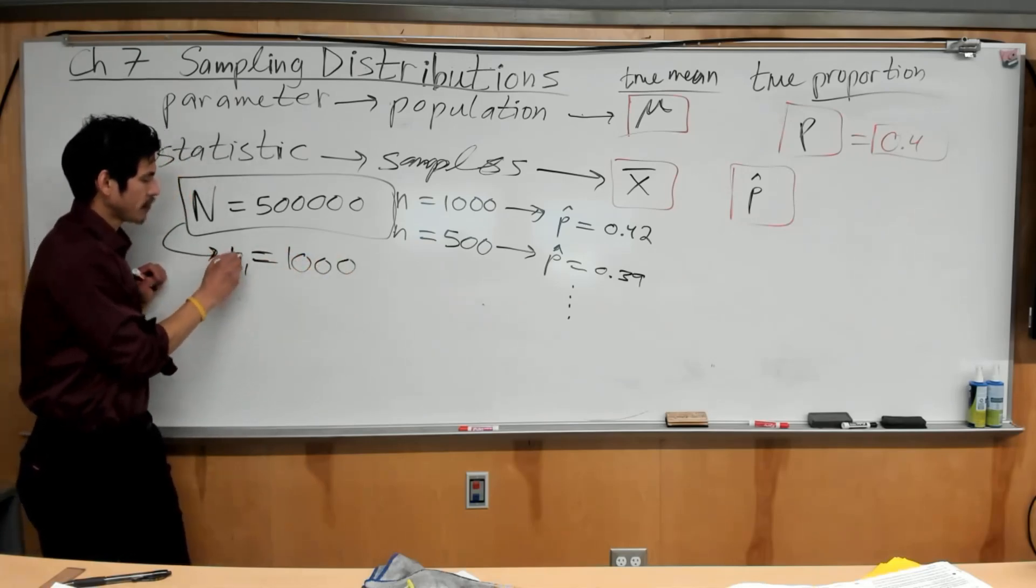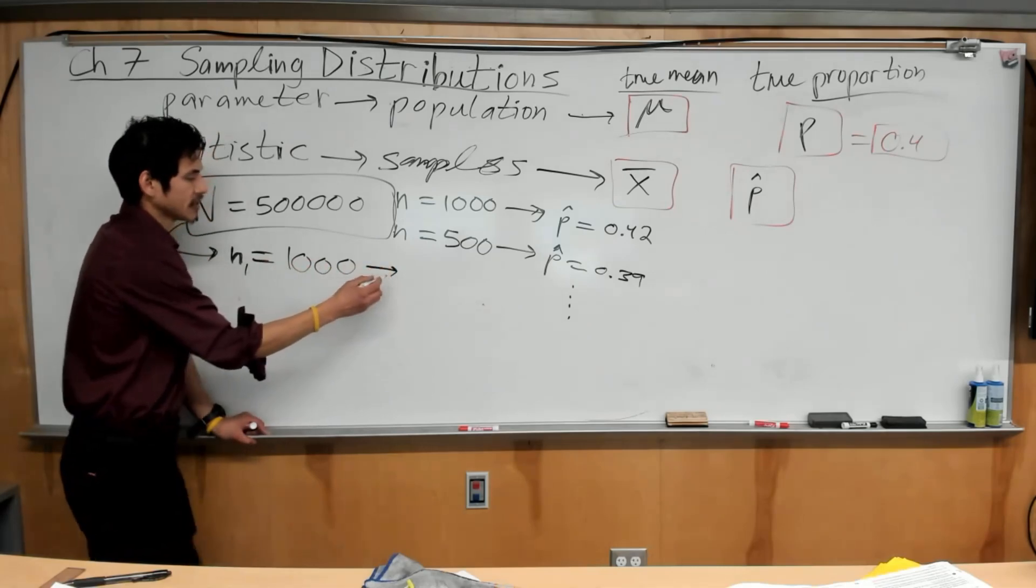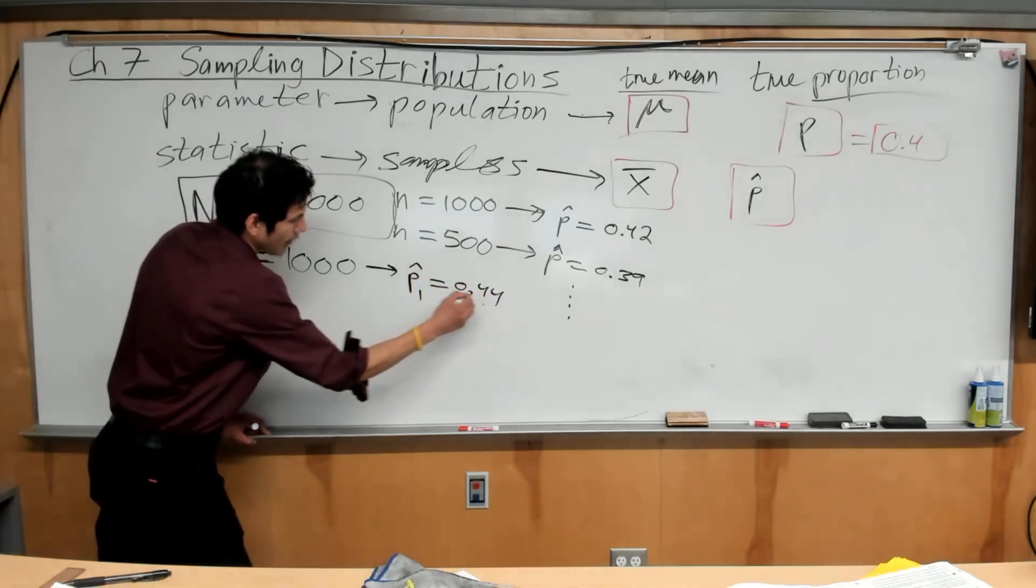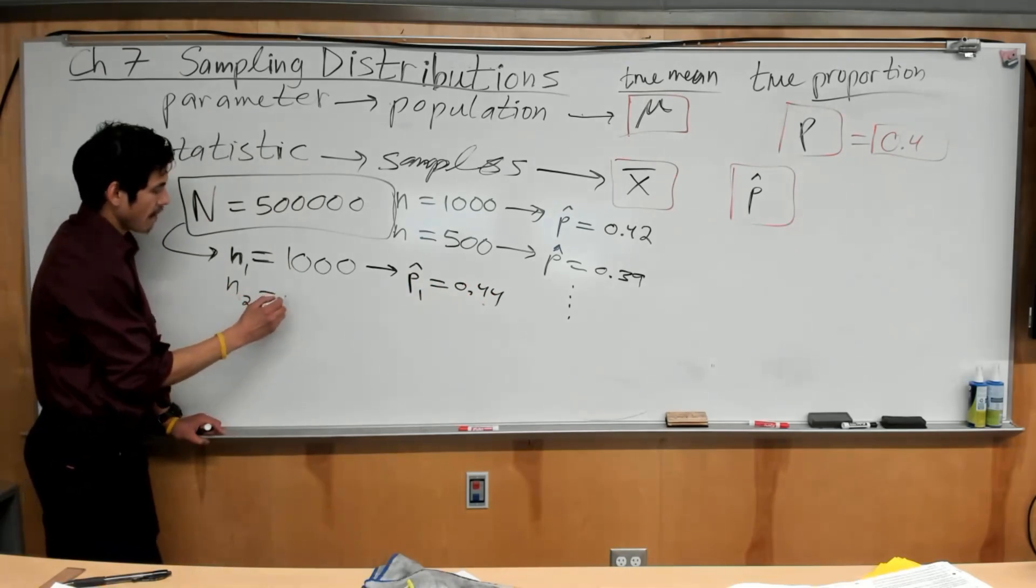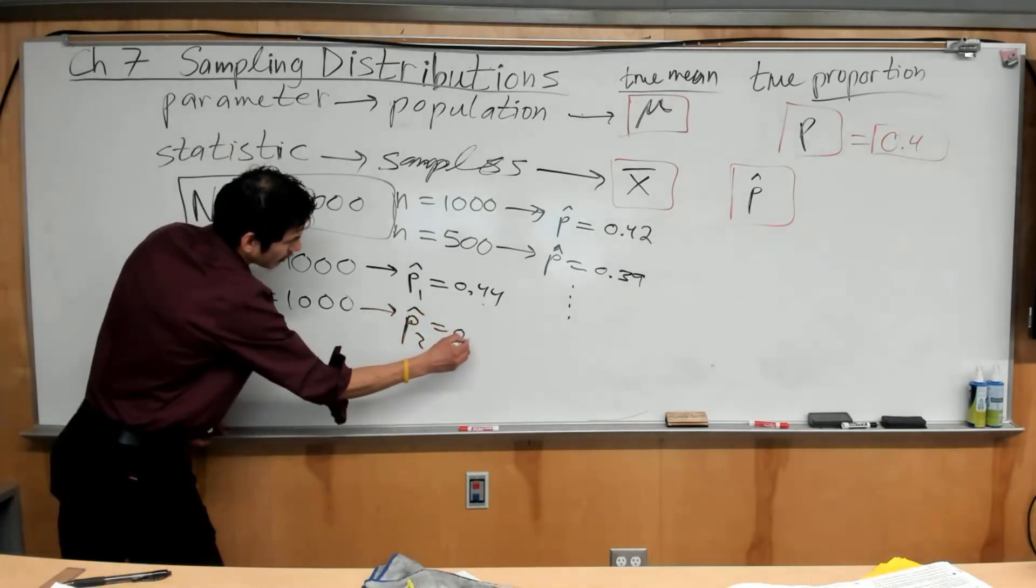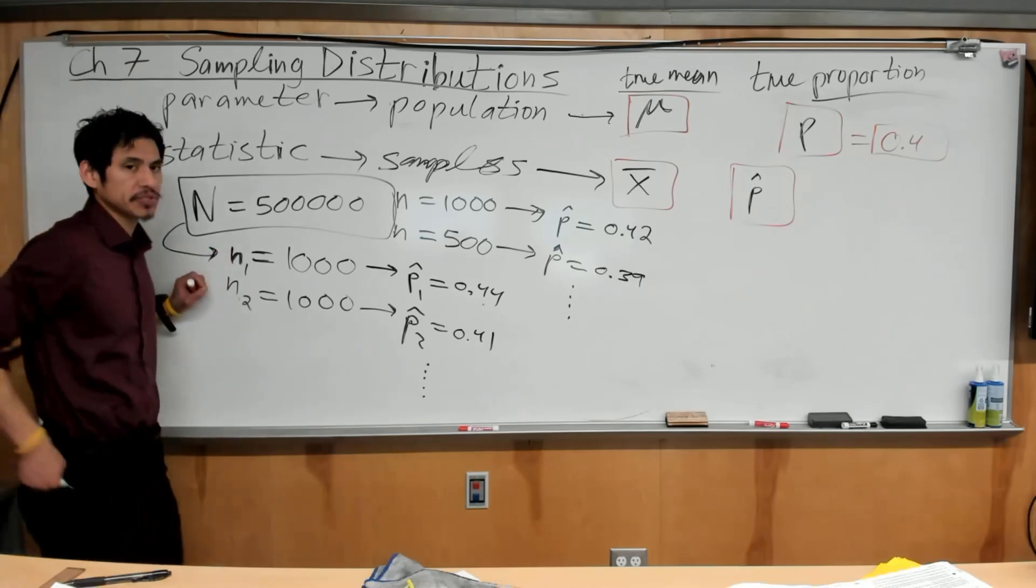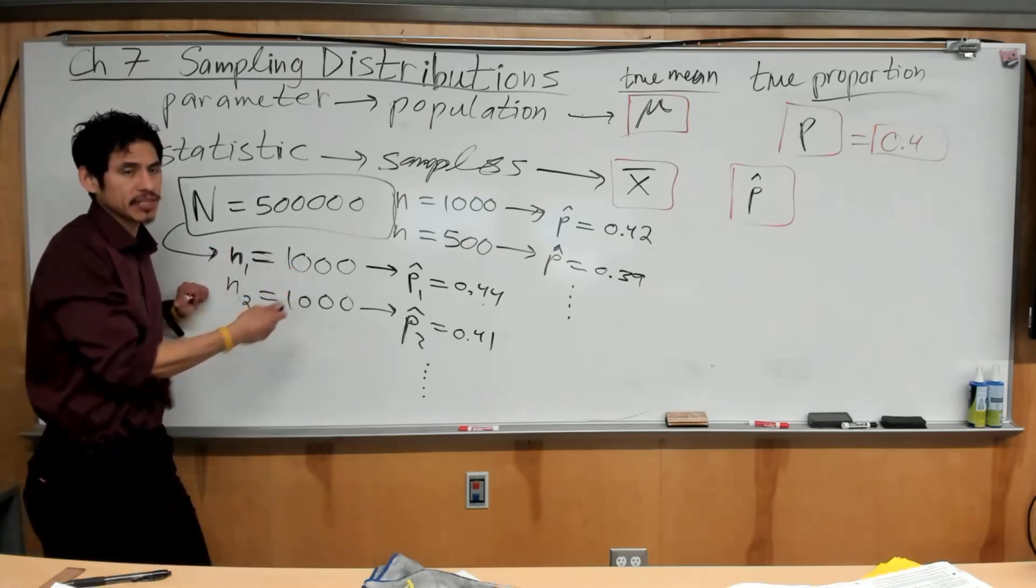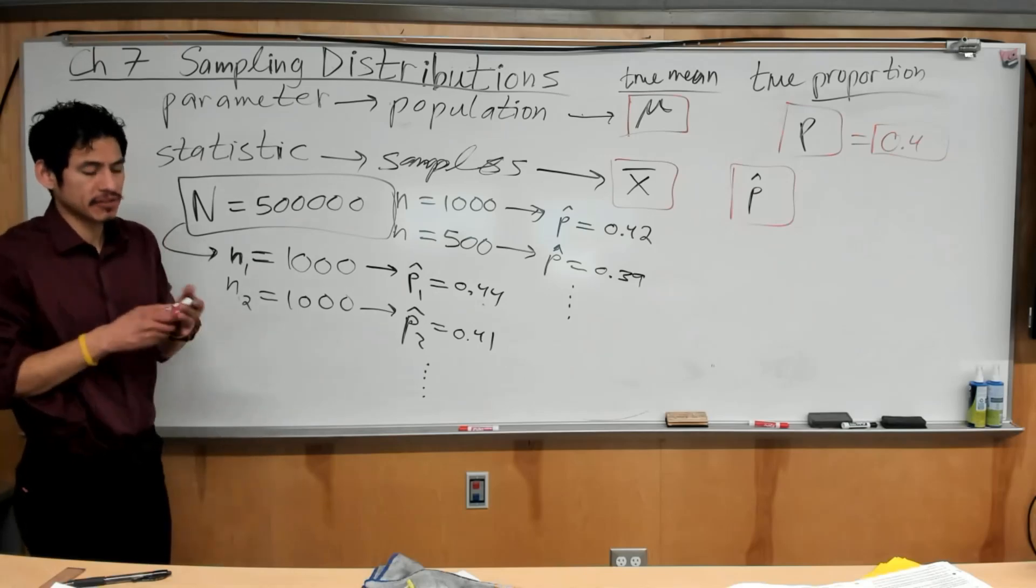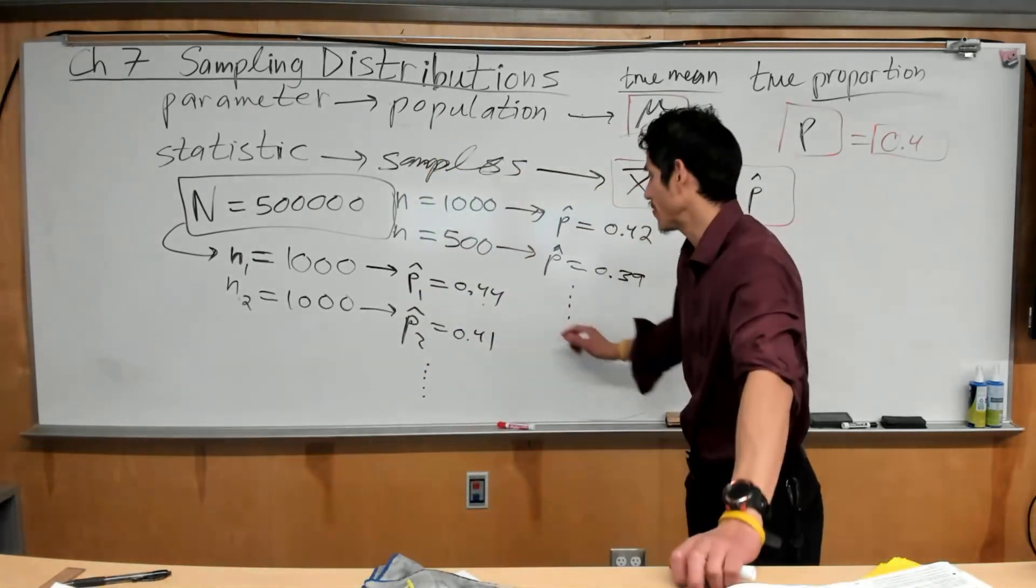And you take one sample in each state. So your first state of 1,000 students, your sample has a sample proportion of 0.44. You take another 1,000 from a different state and you get a sample proportion of 0.41, and so forth. This is called a sampling distribution of this sample statistic because you're going to get different values, but the key thing is that for each distribution, for each sample size, there's a different sampling distribution.